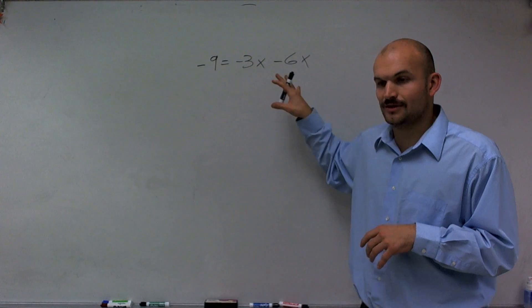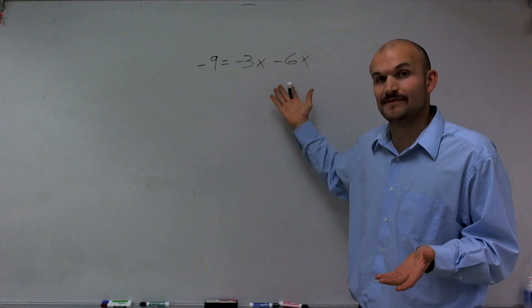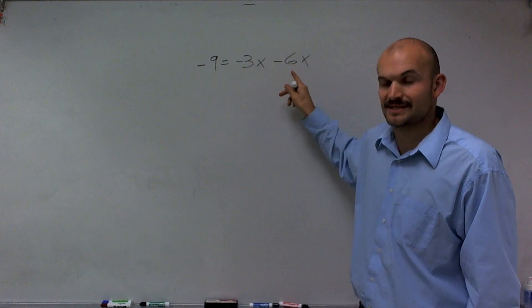What I'm going to do is look at whether I can combine these variables at all. Since they're on the same side of the equation and they're both like terms, I can combine them. So I have -3x minus 6x.